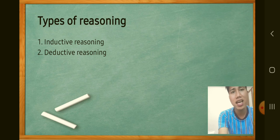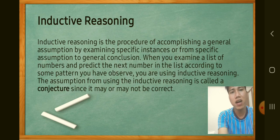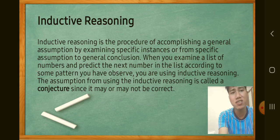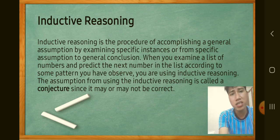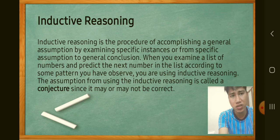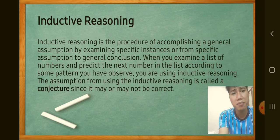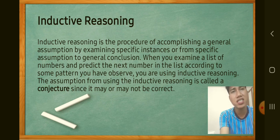Inductive reasoning is the procedure of forming a general assumption by examining specific instances — from specific cases to a general conclusion. When you examine a list of numbers and predict the next number based on a pattern you have observed, you are using inductive reasoning. Inductive reasoning moves from specific to general: you give examples first and then draw a general conclusion.